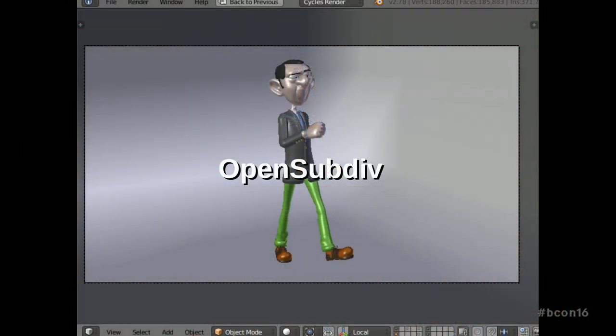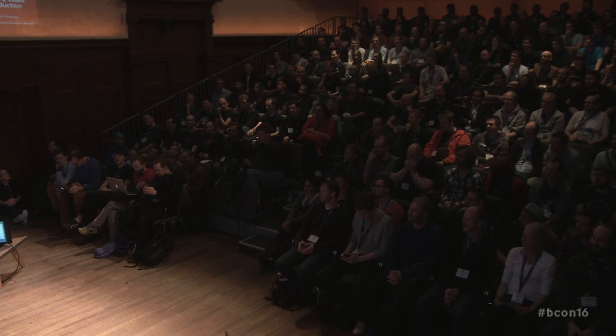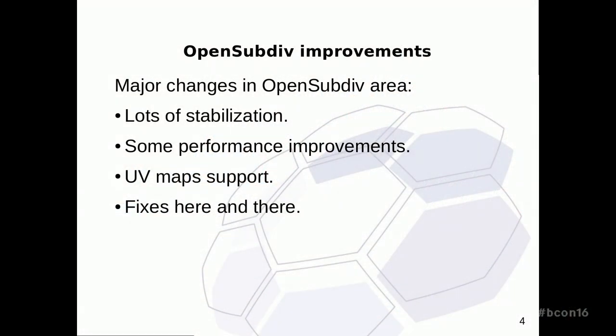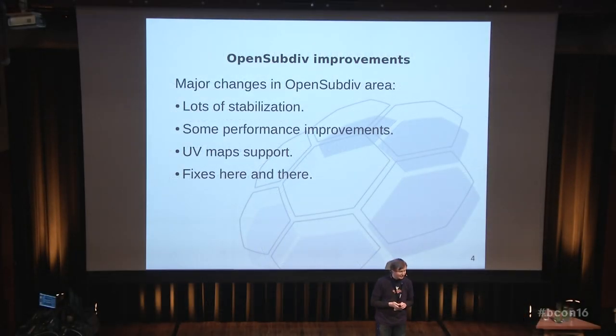So, OpenSubdiv — for those who didn't know what it is, it's a more optimized subdivision surface engine which runs on GPU. It's been in Blender for about a year now. For the past year we've mainly been working on fixing all those little hardware-dependent bugs, and did some performance improvements trying to minimize the latency between when you modify the topology and when you get the result back in your viewport. And finally we have UV map support, which took some work since there was no support on the OpenSubdiv side — we had to work around it our own way. But now OpenSubdiv 3.1 is released, so we can get rid of our hacks. And also small fixes here and there.